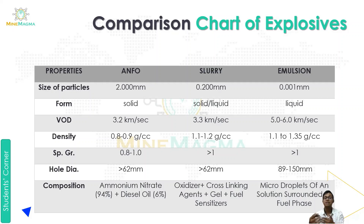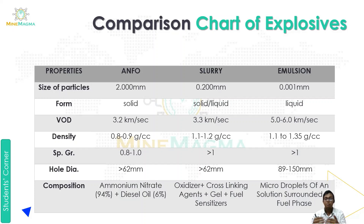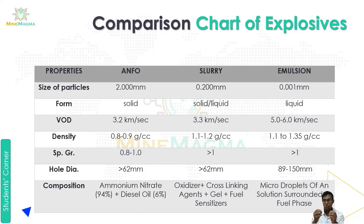Regarding composition: ANFO is ammonium nitrate (94%) and diesel oil (6%). Slurry is created by mixing oxidizer, cross-linking agent, gel, and fuel sensitizers. Emulsion consists of micro-droplets of oxidizer solution surrounded by a fuel phase — as explained earlier, these micro-droplets are in fine particle size surrounded by the fuel phase.